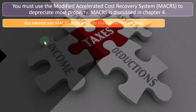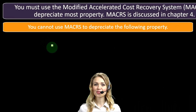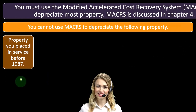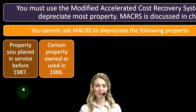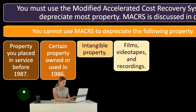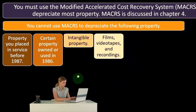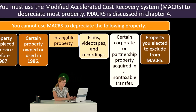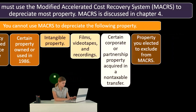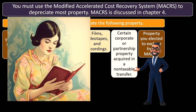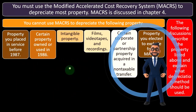You cannot use MACRS to depreciate the following property: property placed in service before 1987, as there were different rules prior to that; certain property owned or used in 1986; intangible property; films, videotape, and recordings; certain corporate or partnership property acquired in a non-taxable transfer; and property you elected to exclude from MACRS. Generally, if we're putting something on the books going forward, MACRS is the method we're going to use — these are the exceptions.